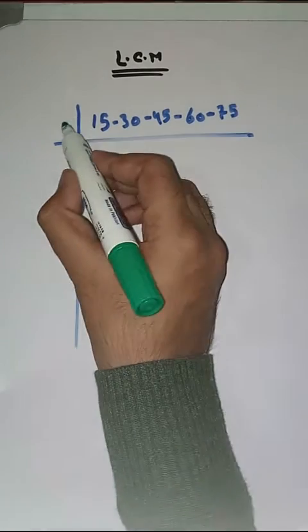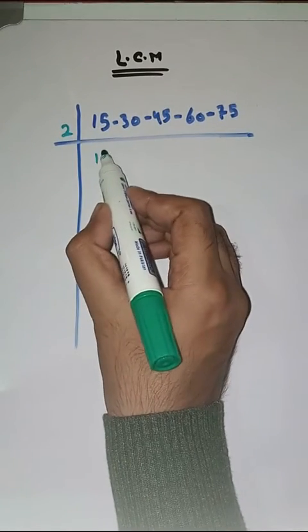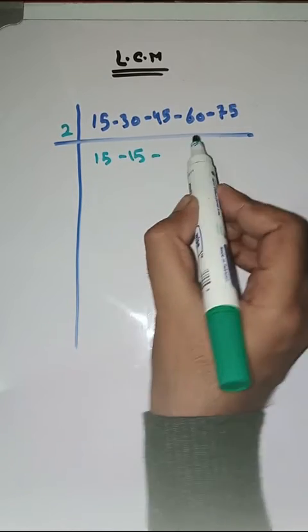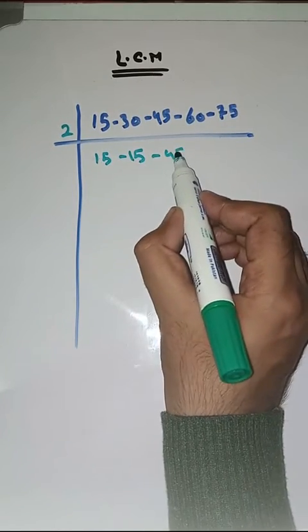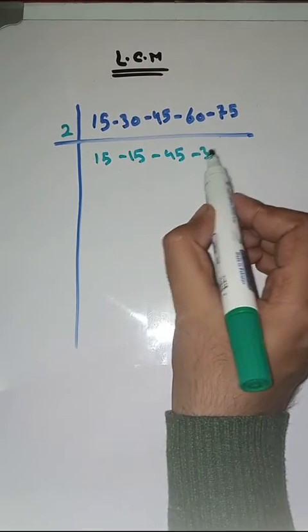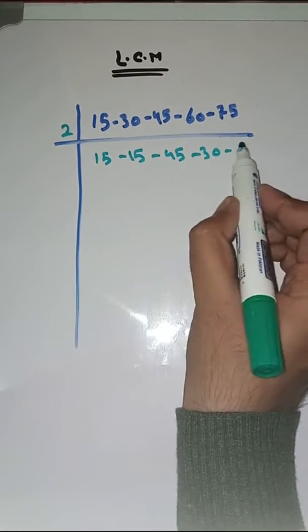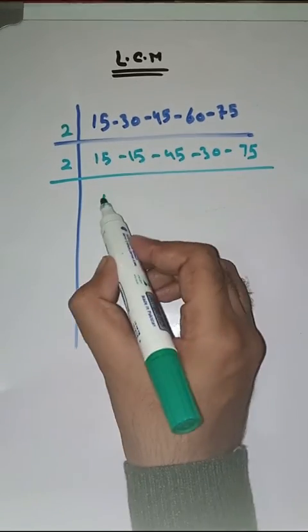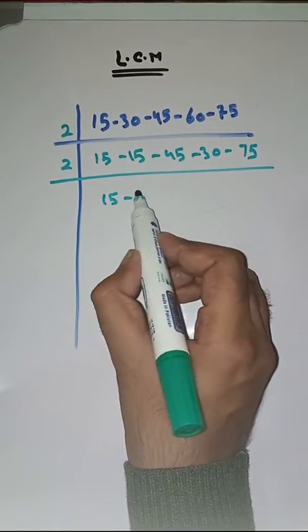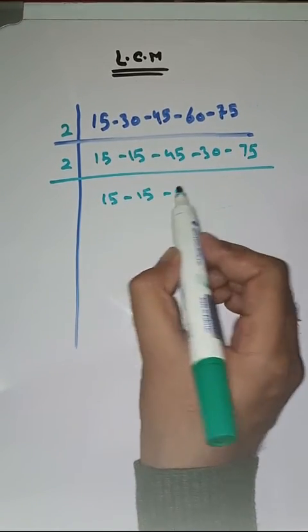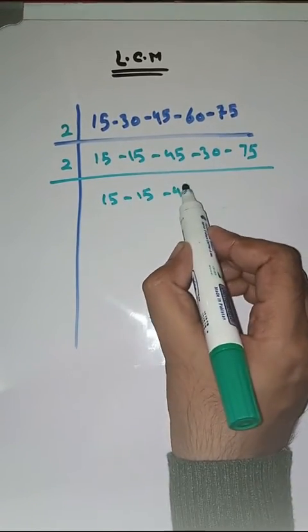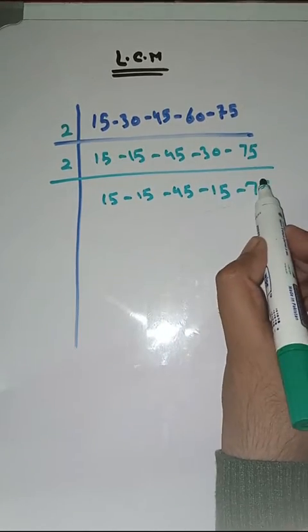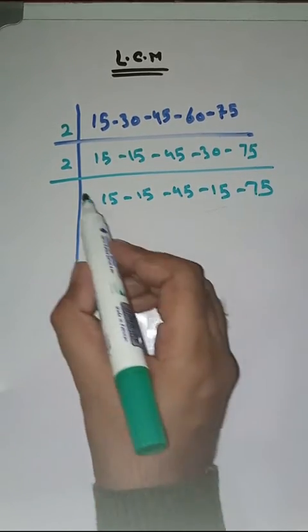So we start with 2. 15 as it is, 2 15s are 30, 45 as it is, 2 30s are 60, 75 as it is. Again with 2: 15 as it is, 15 as it is, 45 as it is, 2 15s are 30, 75 as it is.